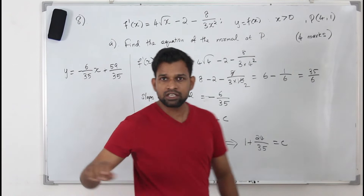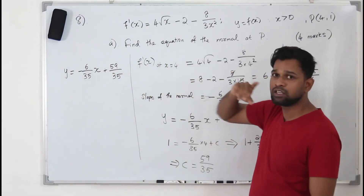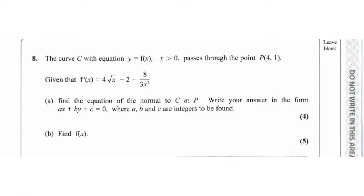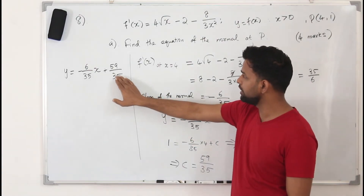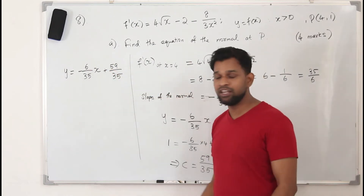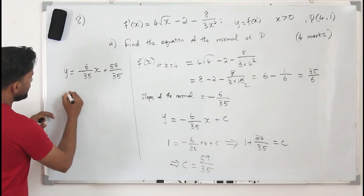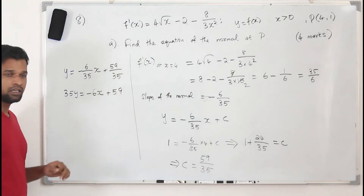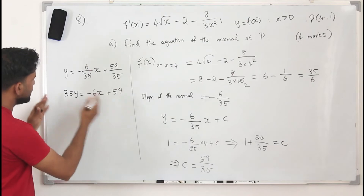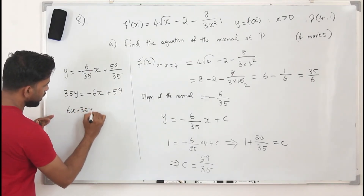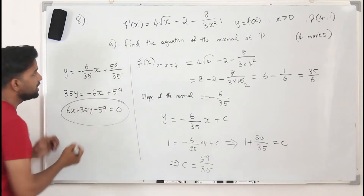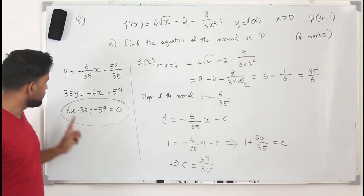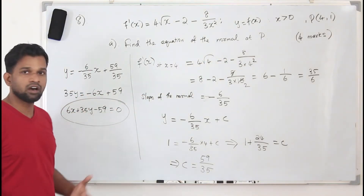When you leave the result in this form you won't get the full mark, because when you read the question they want the equation of the normal in the form ax plus by plus c equals 0, where a, b, c are integers. So you need to remove the fractions — multiply everything by 35. You get 35y equals negative 6x plus 59, and rearranging gives 6x plus 35y minus 59 equals 0.